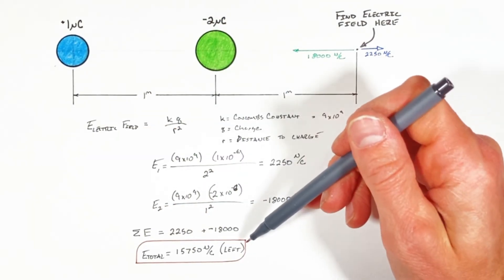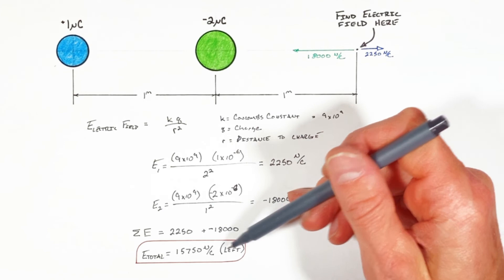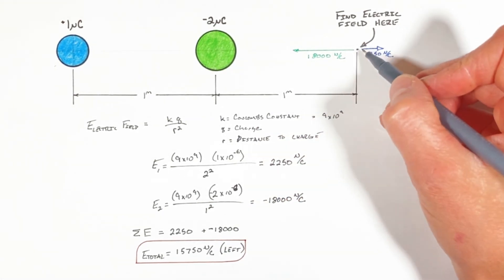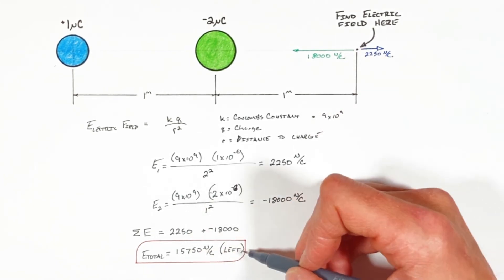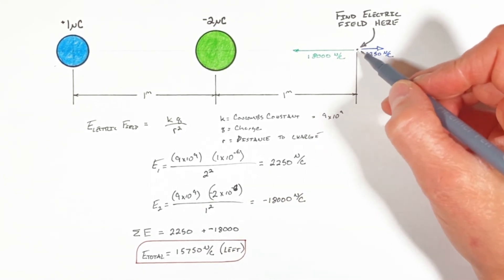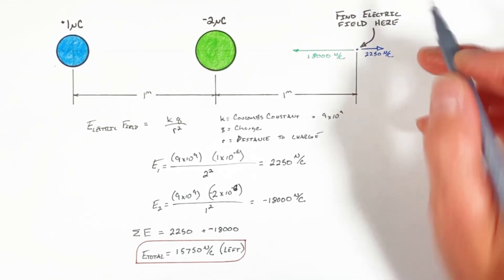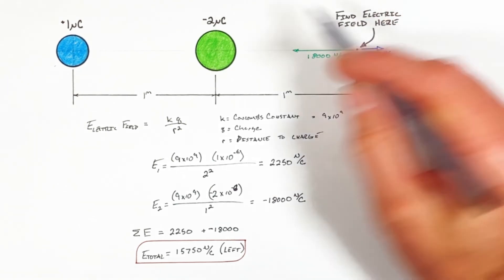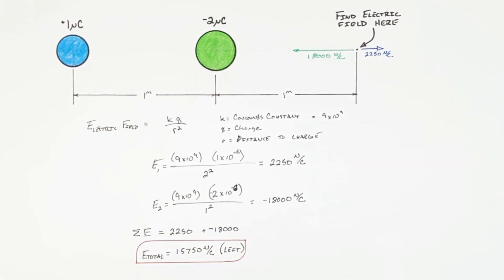A total electric field strength of 15,750 newtons per coulomb to the left. Now if we were to put a known charge right here, we could simply multiply the electric field by that quantity of charge in order to get the actual force on that charge at this point. So this has been how to solve for the electric field at some point in line with two charges. I hope you found this useful, and on that note, that's all for now.